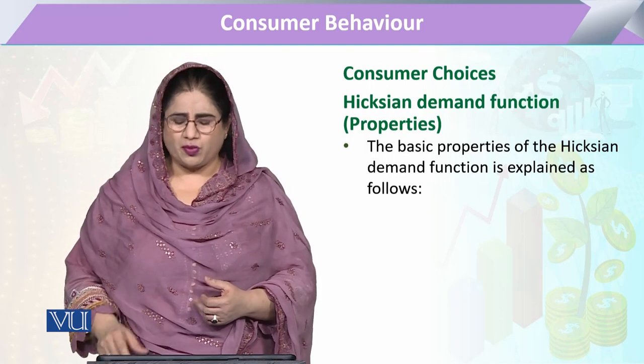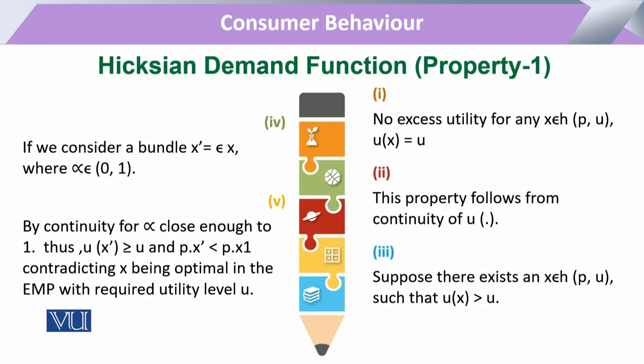The first property is that there will not be any excess utility for any commodity X that is a member of the Hicksian demand function. This Hicksian demand function depends upon price and utility kept constant. The price for the commodity under consideration will only vary, while utility and the prices of all other goods are kept constant.